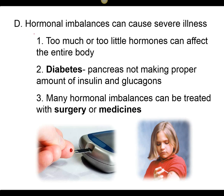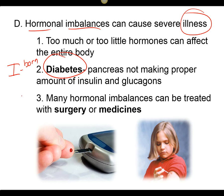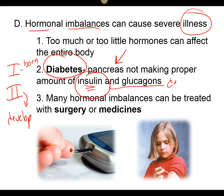Hormonal imbalances can cause illness like diabetes. Diabetes type 1 is something you're born with — it's an autoimmune disease that attacks the pancreas so it doesn't produce insulin. Diabetes type 2 is something you develop because you overproduce insulin from eating so much sugar that your body becomes desensitized and can't regulate blood sugar anymore.